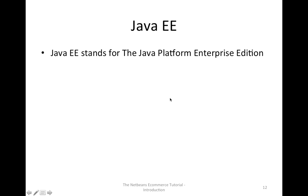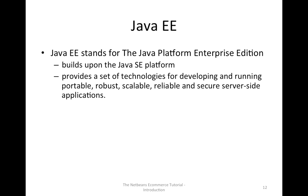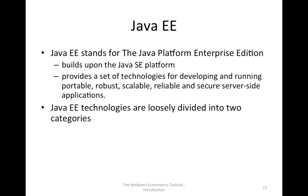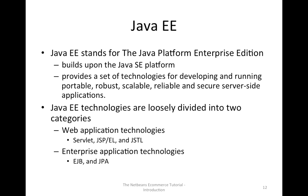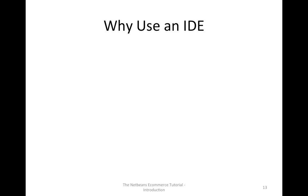Java EE stands for Java Platform Enterprise Edition. It builds upon the Java SE platform and provides a set of technologies for developing and running portable, robust, scalable, reliable, and secure server-side applications. Java EE technologies are loosely divided into two categories. One is web application technology, which includes Servlet, JSP, EL, and JSTL, and more. Another is enterprise application technologies, for example EJB and JPA. We will study all of those through this tutorial.